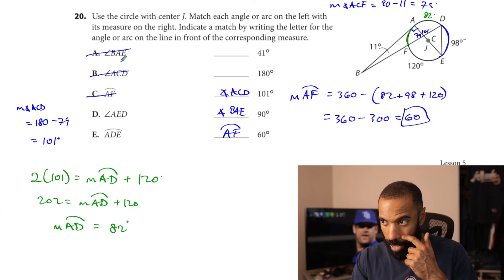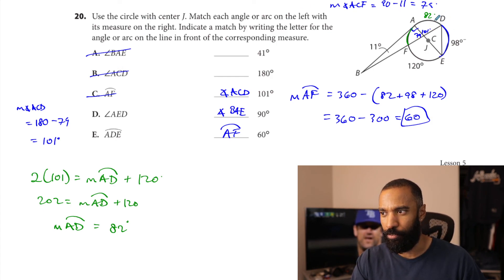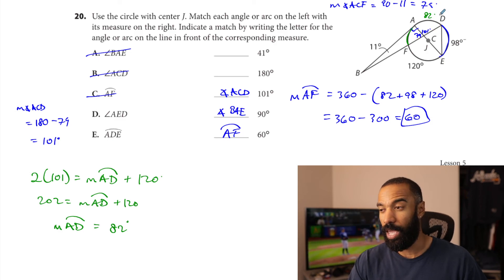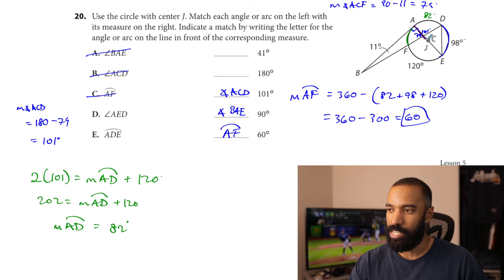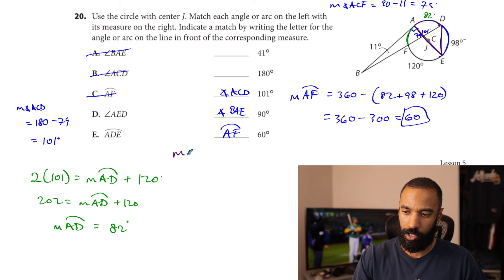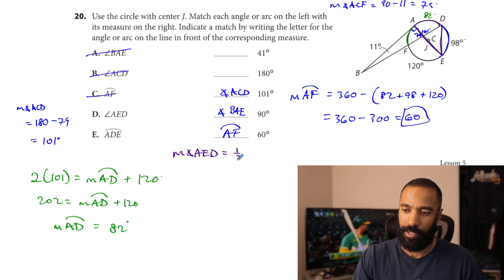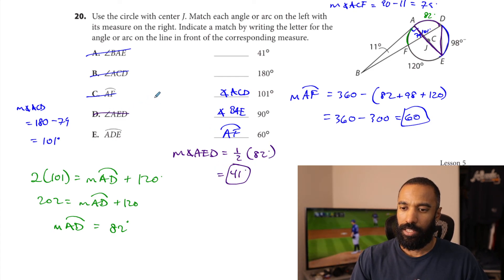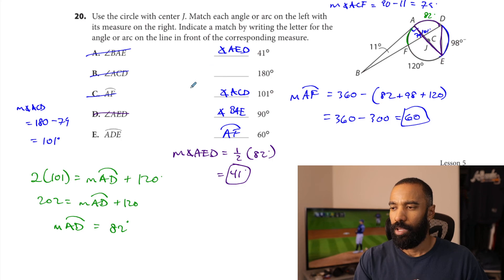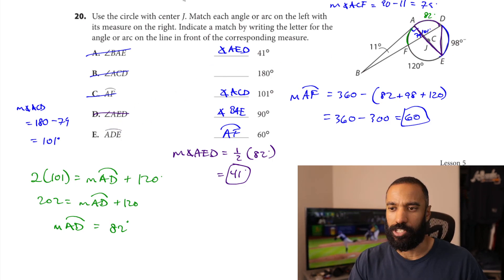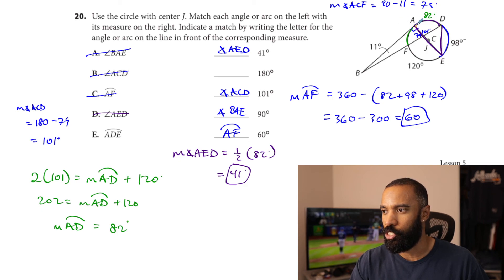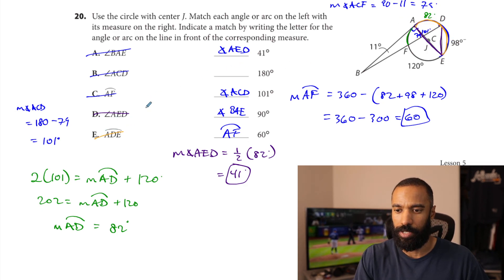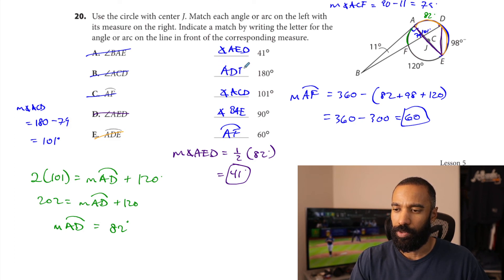Angle AED. At least now I have the 82 — this is good. AED is straight up an inscribed angle right here. Its intercepted arc is 82. So measure of angle AED is half 82 degrees, which is 41 degrees. And the last one must be 180 — arc ADE. Well, that's a semicircle, because there's the center J that it goes through. Arc ADE — that's the easiest one — and that one's 180 degrees.